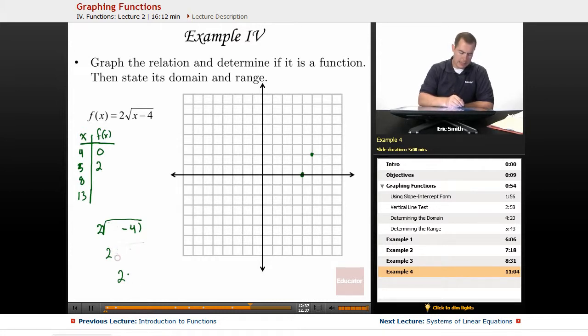Let's go ahead and put in the 8. So 8 minus 4 would be 4. The square root of 4 is 2, and 2 times 2 is 4. So this shows that when I put in an 8, my output is 4.